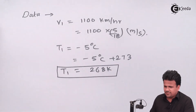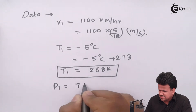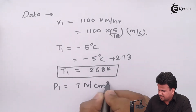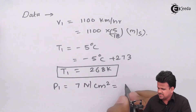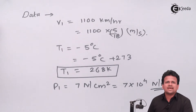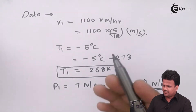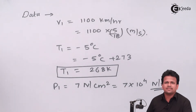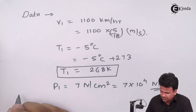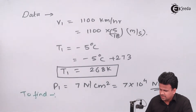Next, the pressure P1 equals 7 Newton per centimeter square, which is 7 into 10 to the power 4 Newton per meter square in SI units. With all this initial data, let us first calculate the Mach number, then find stagnation density, stagnation pressure, and stagnation temperature.